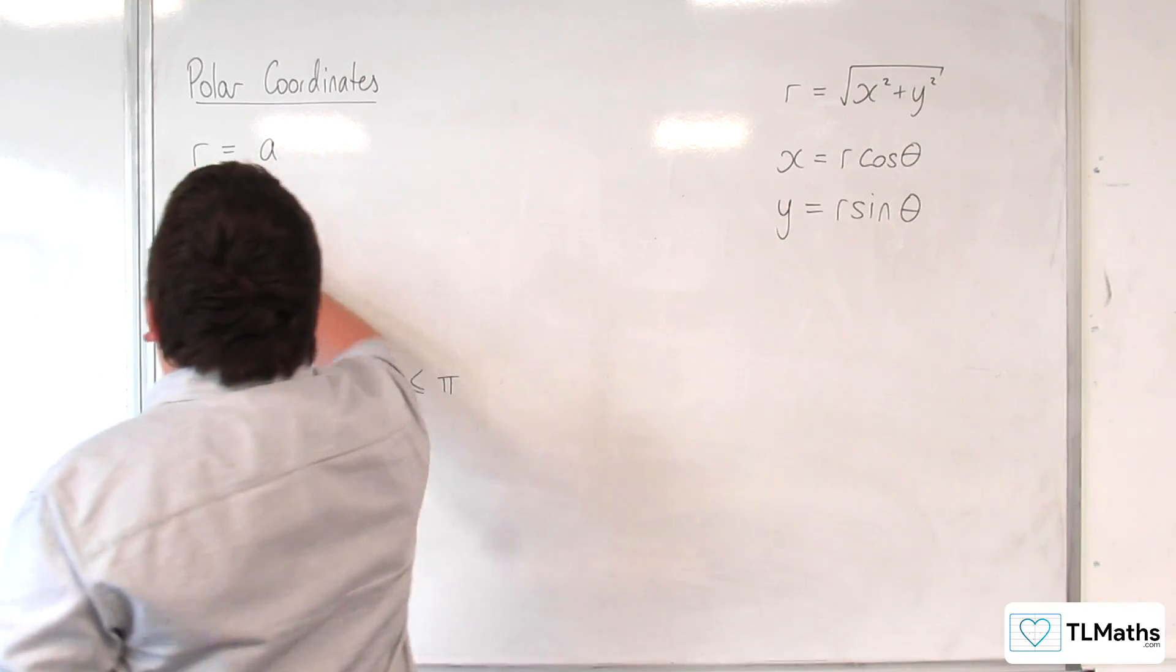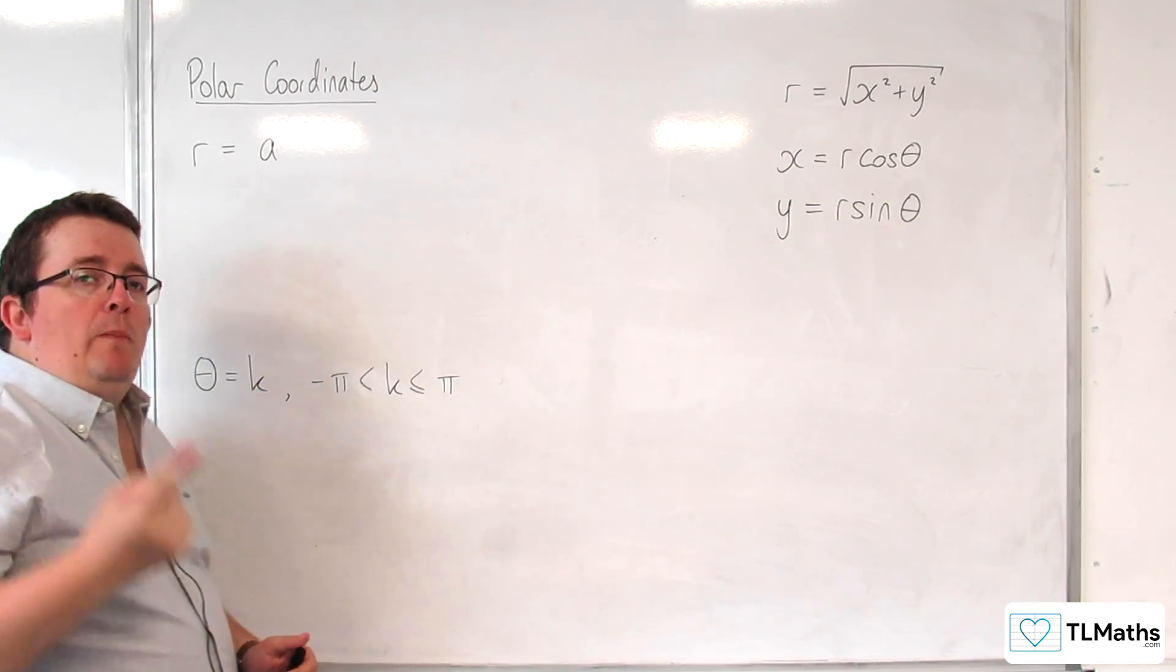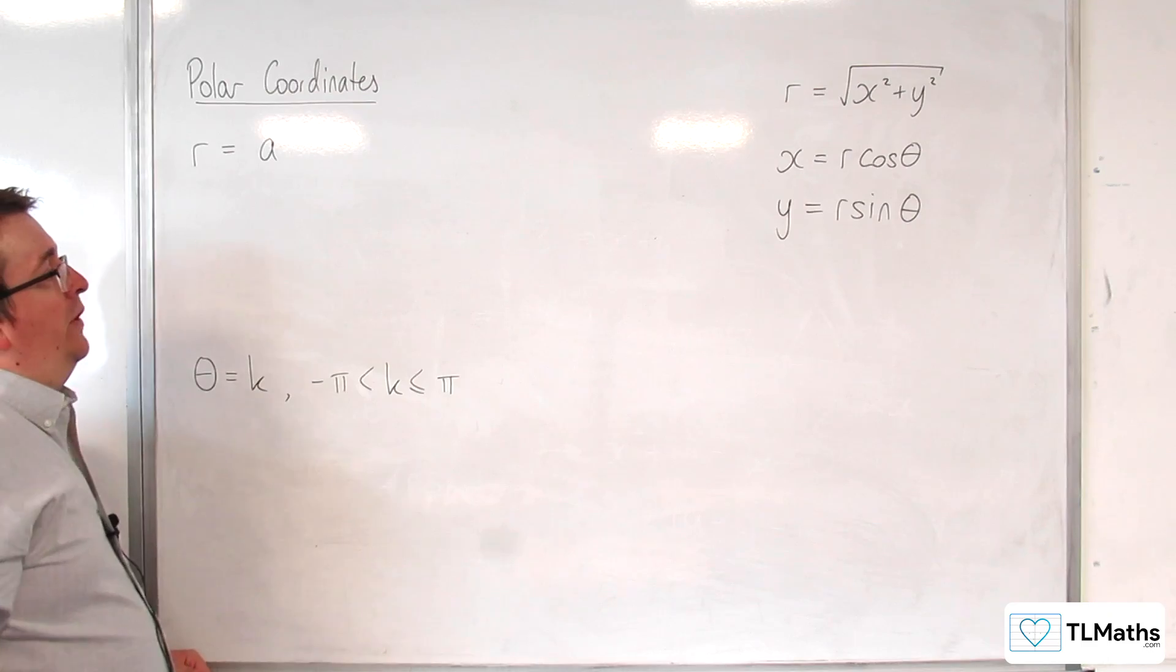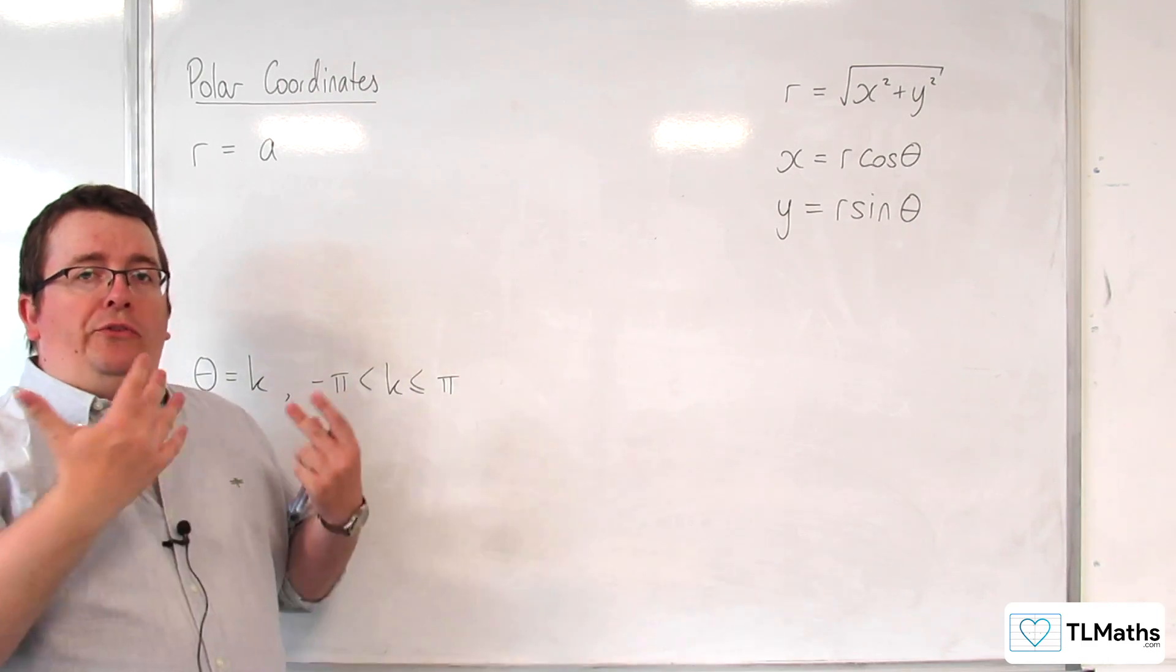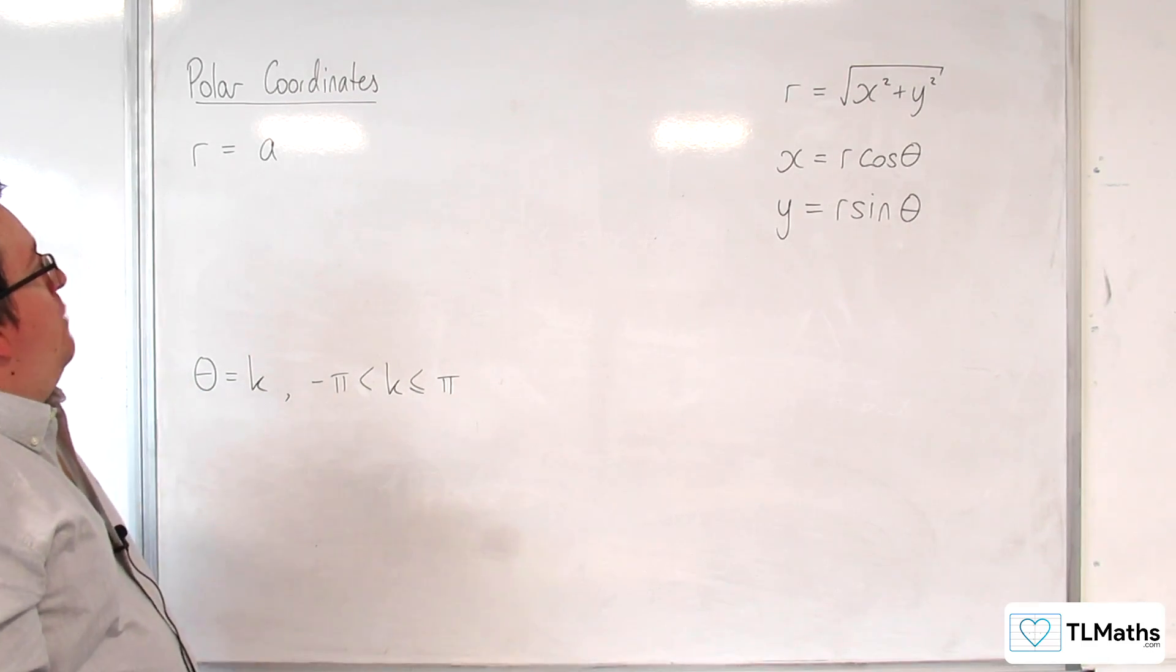Now r equals a - you might be thinking, oh that's very similar to when we had mod z equals a, which was a circle centered at the origin with radius a.